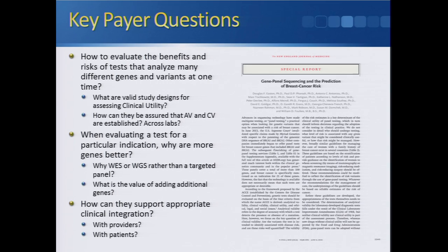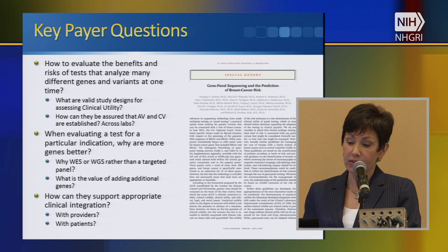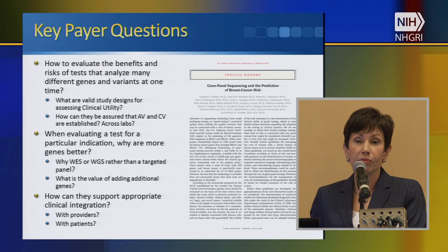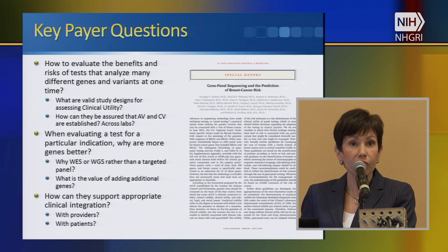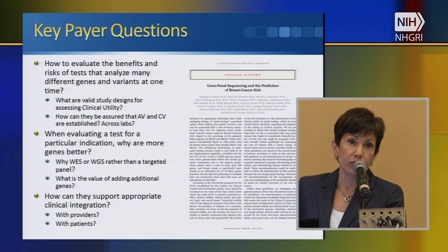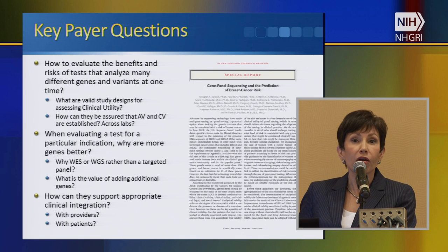These are some of the key payer questions I would think about in terms of clinical sequencing: how to evaluate the benefits and risks of tests that analyze different genes and variants at one time. This is inherently a clinical utility question. Thinking about what CESAR does — what are the valid study designs for assessing clinical utility? We've heard a lot about randomized controlled trials, and payers have heard that while desirable, that study design is not feasible for clinical sequencing. So what are the alternatives — large cohort studies, modeling as Dave suggested?